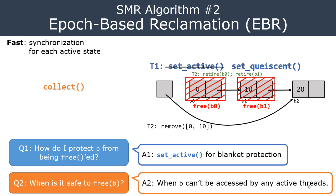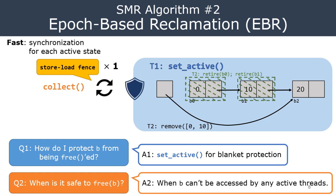As mentioned before, EBR is fast because inside T1's iteration it doesn't need to call expensive fences all the time — each iteration doesn't incur any synchronization fences, because all the pointers are already protected in a blanket manner. You may need to issue a fence when setActive is called, but after setActive is called, no additional fences are needed in each iteration.